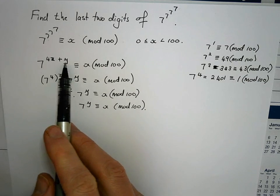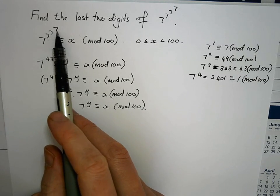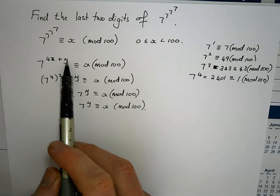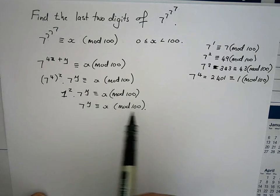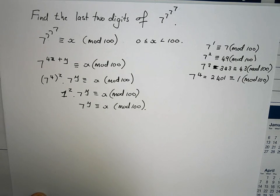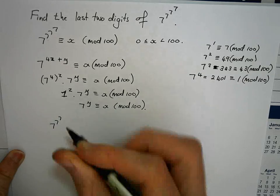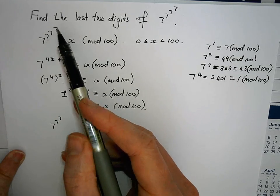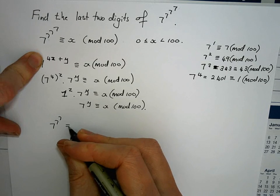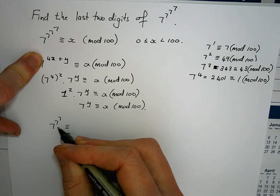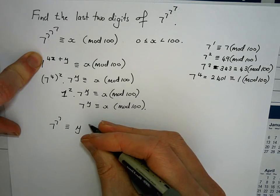This is looking much better because y here — the remainder after dividing the exponent 7^7^7 by 4 — is going to be something between 0 and 3. So that's very easy to work with. If I can find this y, the congruence is going to be much easier to solve. What I need to find is the remainder when I divide 7^7^7 by 4, which means solving a new congruence modulo 4.